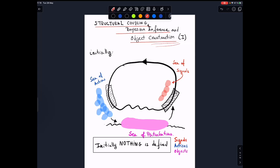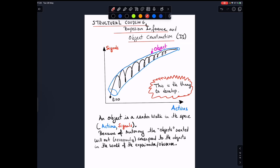This is why this is called structural coupling by Bayesian inference and object construction. Initially, when you have an organism that is facing a medium, he's facing, he doesn't have a precision about which are the perturbations. The perturbations can be many different things. Which is the set of internal signals that every one of these perturbations triggers, and which are the actions that this organism takes. Then initially nothing is defined, not the signals, the actions, all the objects.